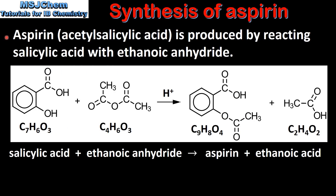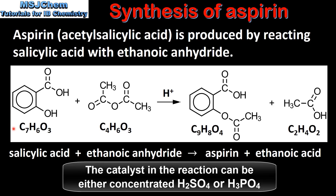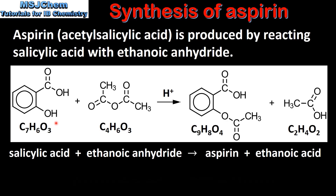Aspirin, which is also known as acetylsalicylic acid, is produced by reacting salicylic acid with ethanoic anhydride. In the reaction, salicylic acid reacts with ethanoic anhydride in the presence of a sulfuric acid catalyst to produce aspirin and ethanoic acid. The excess reactant is usually ethanoic anhydride, which makes salicylic acid the limiting reactant. Therefore, the amount of aspirin produced depends on the amount of salicylic acid used in the reaction.